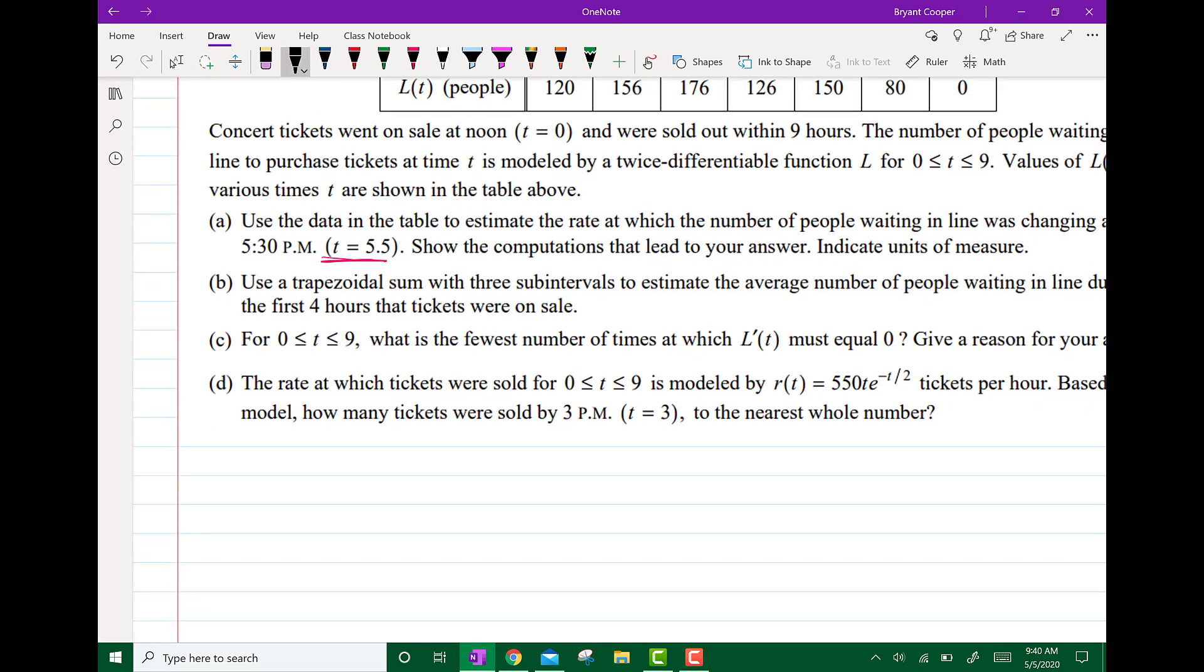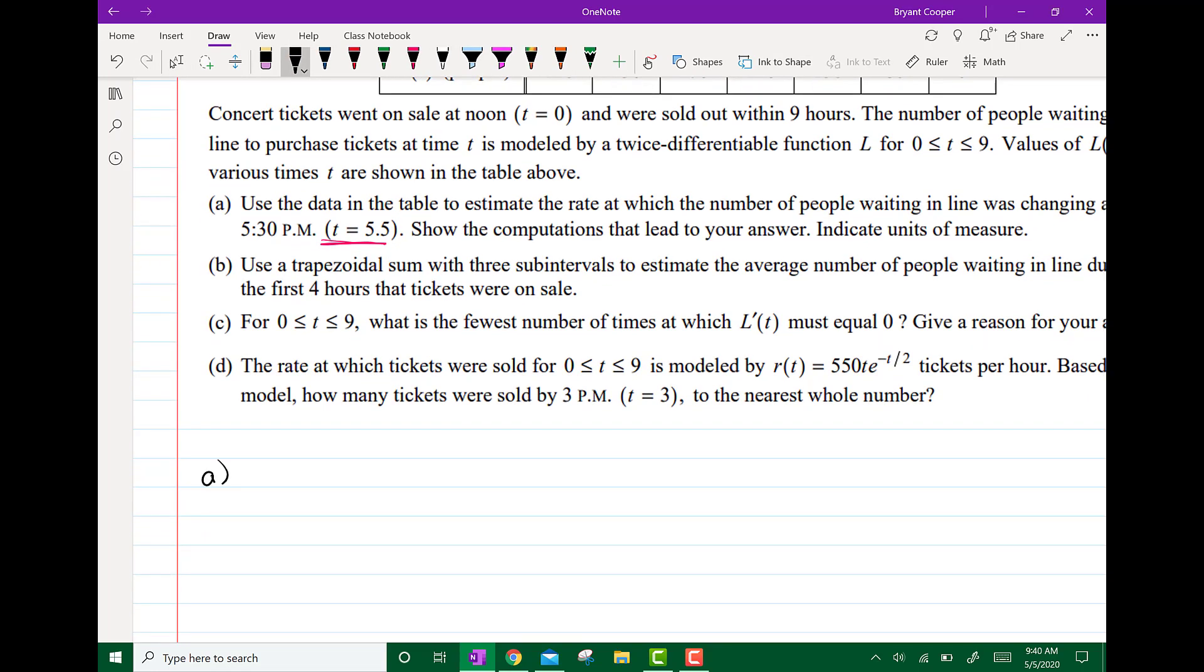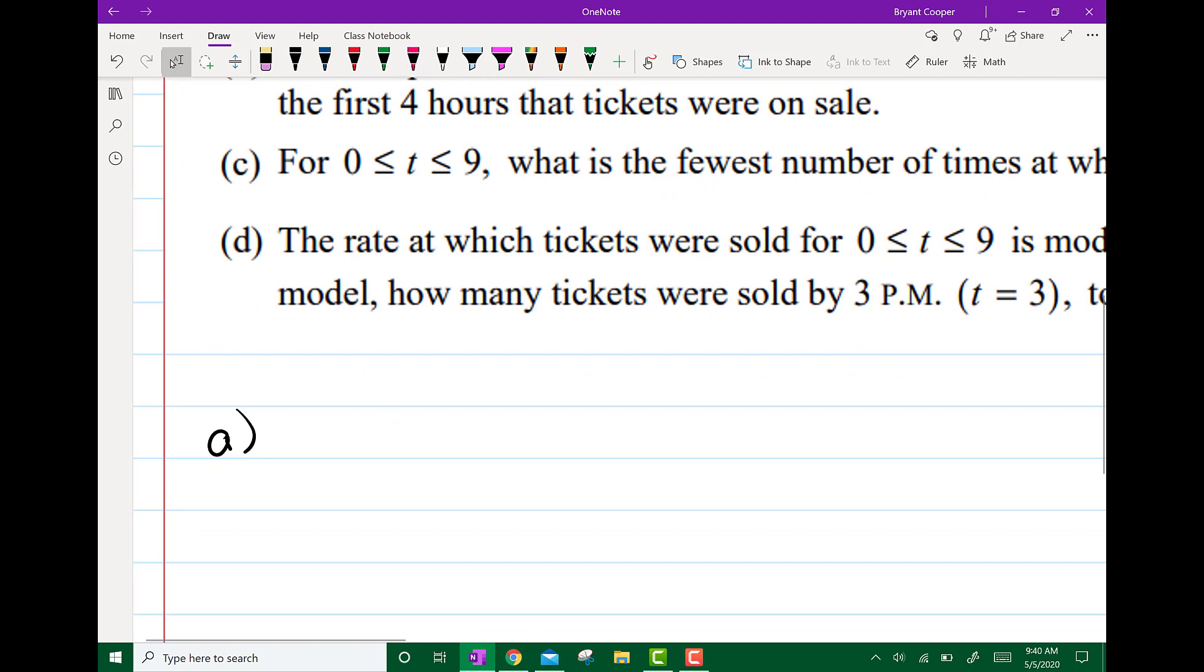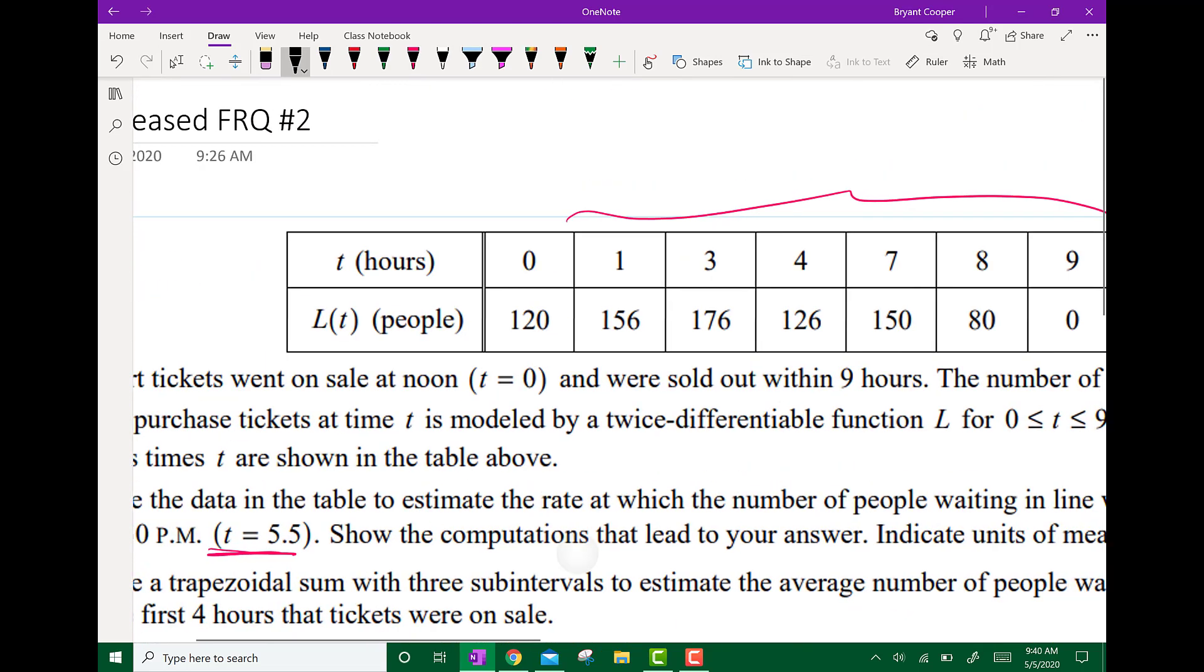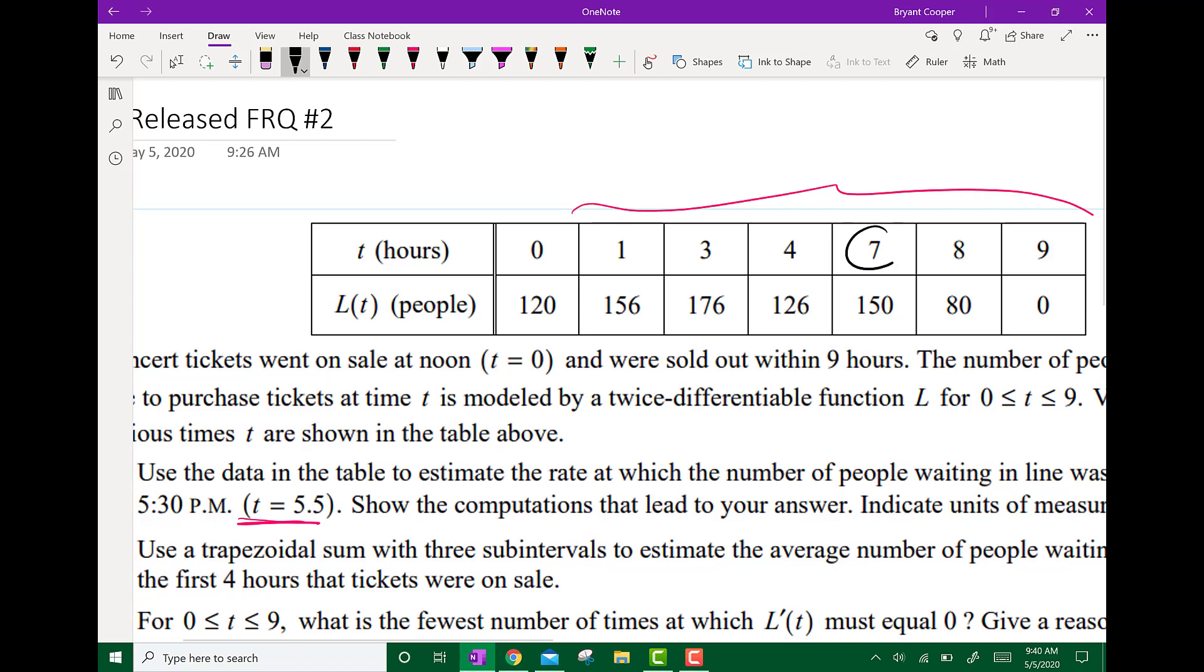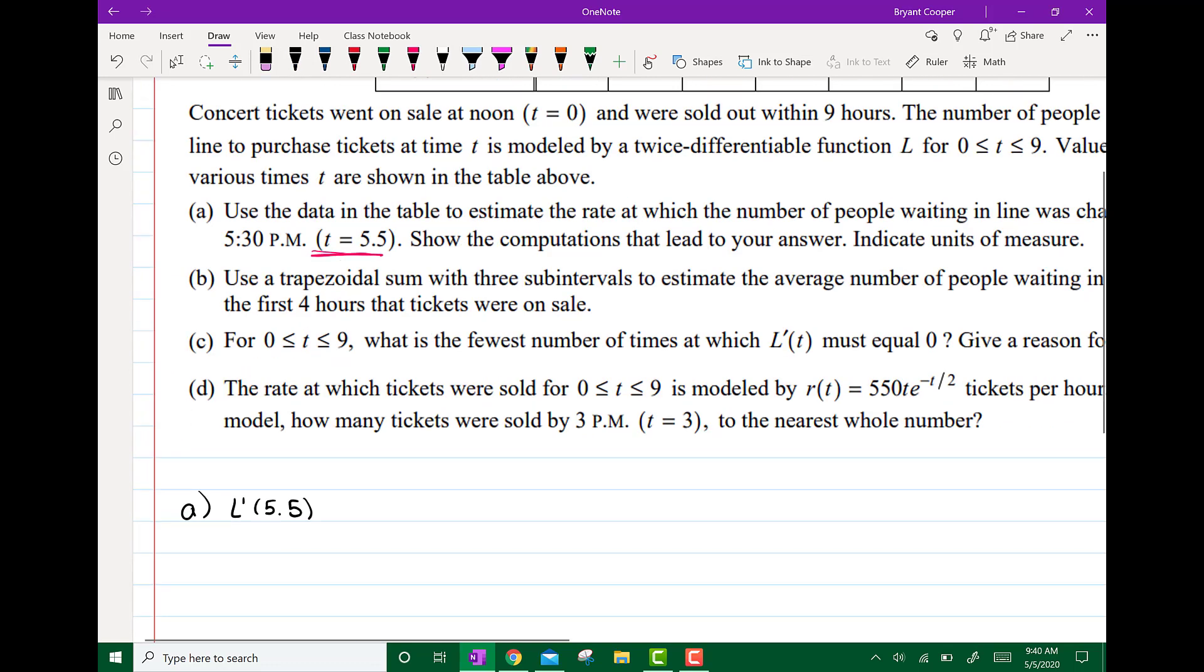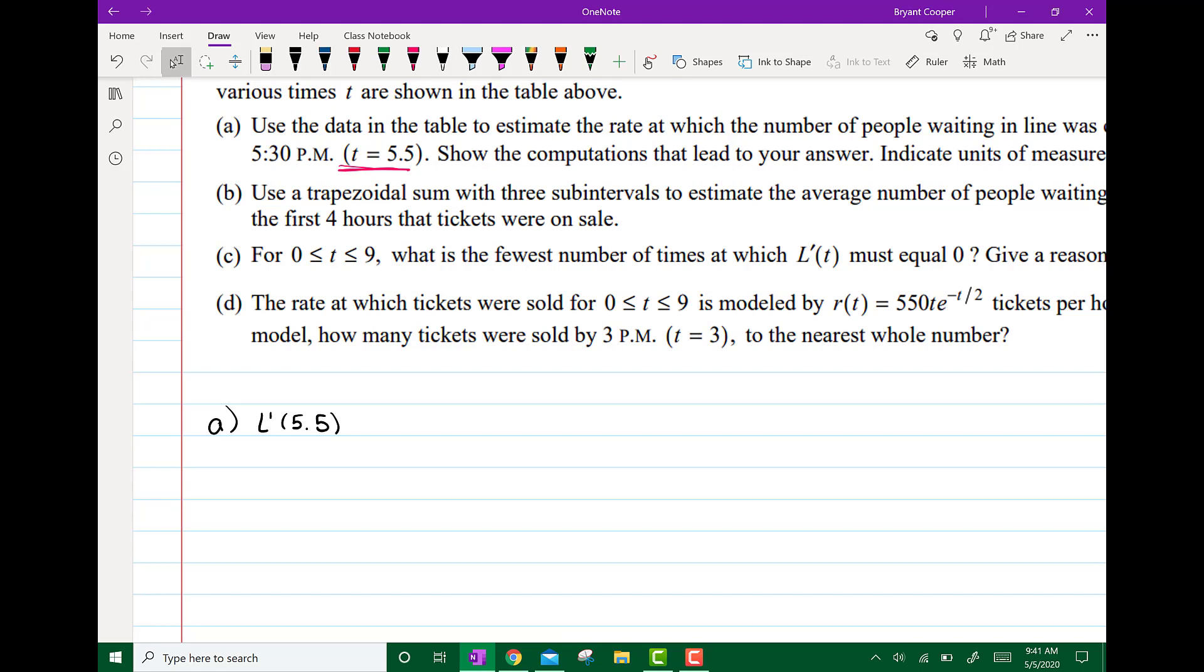So for part A it wants us basically to find L prime of 5.5, but because we're not given a function we're going to have to approximate. So if you notice we're given 7 and 4 and 5.5 is in between. So we're going to use our average rate of change formula.